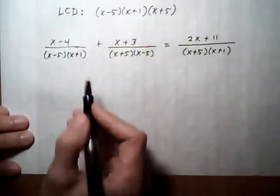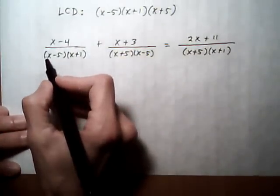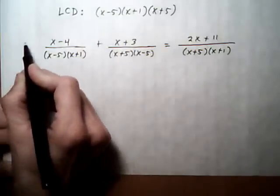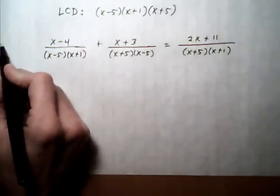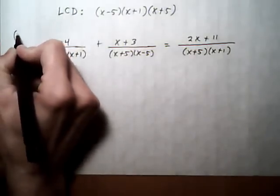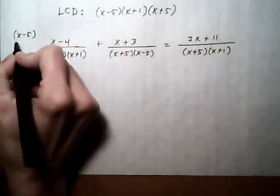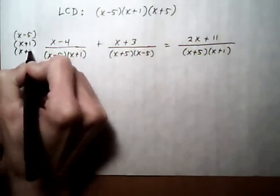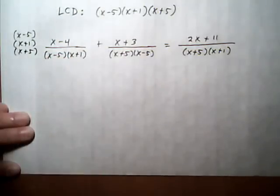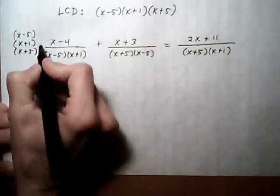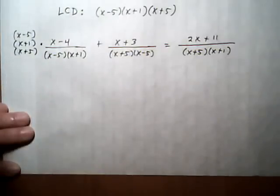Now every term, or every separate fraction here is going to get the LCD multiplied into it. Now what I usually like to do is put it straight across so I can think of it as the LCD over 1 so it looks like a fraction, but it's not going to fit here. So what I'm doing is I'm putting them on top of each other, the different factors. But usually what you want to do is spread it out. So it would be x minus 5 times x plus 1 times x plus 5. All right, so that's all multiplying this first one.